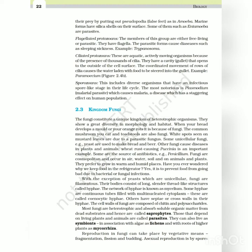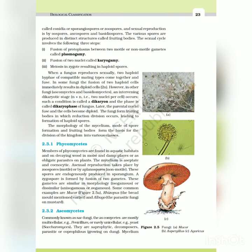Most fungi are heterotrophic and absorb soluble organic matter from dead substrates and hence are called saprophytes. Those that depend on living plants and animals are called parasites. They can also live as symbionts, in association with algae as lichens and with roots of higher plants as mycorrhiza. Reproduction in fungi can take place by vegetative means - fragmentation, fission and budding. Asexual reproduction is by spores called conidia or sporangiospores or zoospores, and sexual reproduction is by oospores, ascospores and basidiospores. The various spores are produced in distinct structures called fruiting bodies.